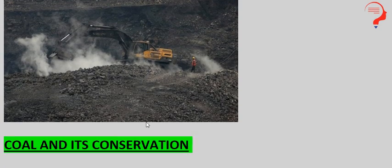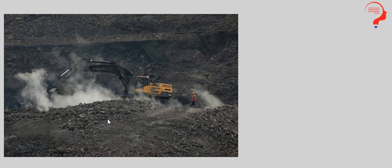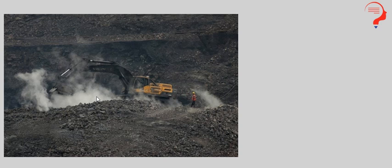As you can see in this picture, yahan pe yeh ek coal mining area hai — ek aisa jagah jo earth ke andar hai, pitting karke, mining karke, khod kar wahan se koyla nikala ja raha hai. Ismein bahut saare logon ki mehnat lagti hai, bahut saare elements aur techniques lagte hain, science se related bahut saari cheezein lagti hain. Coal ko usable form mein convert kiya jaata hai, taaki woh normal household things ya phir industries mein use mein laaya ja sake — it takes a long process as well.